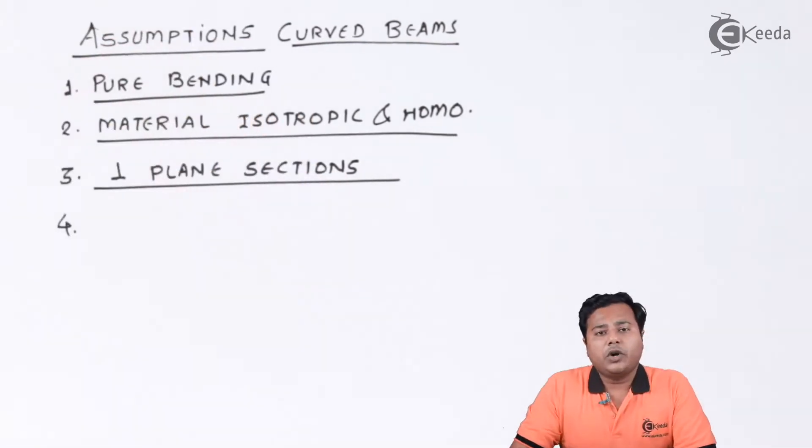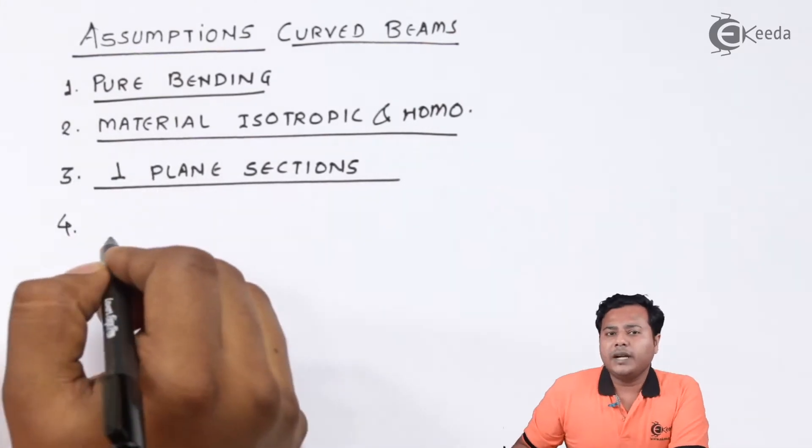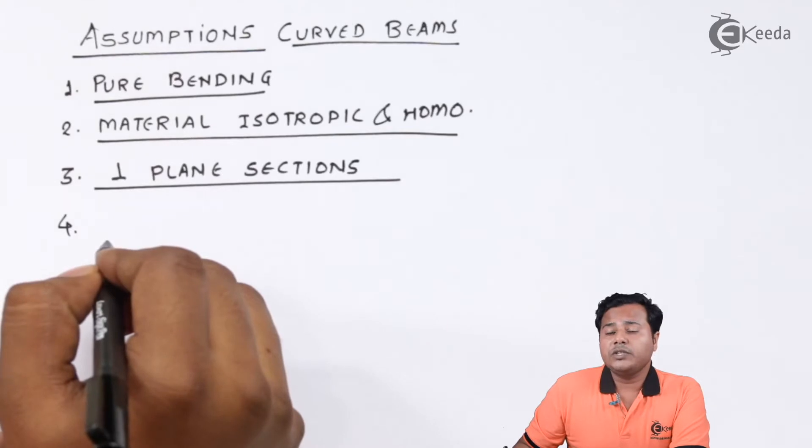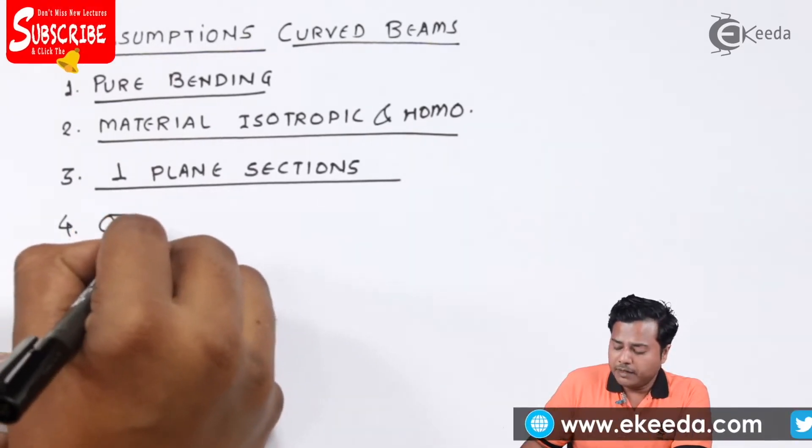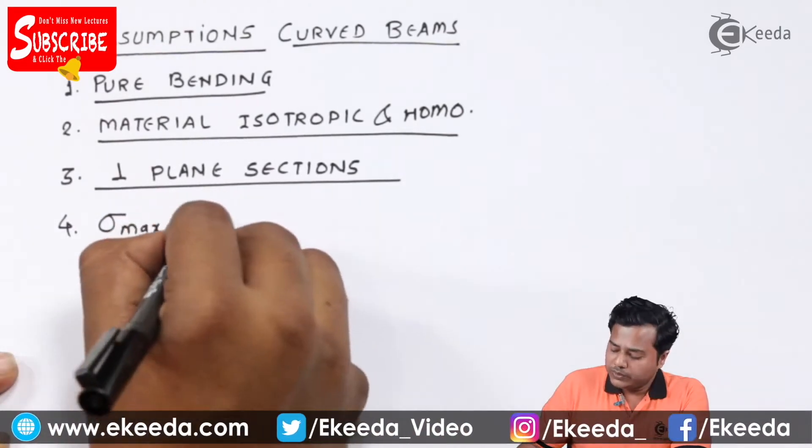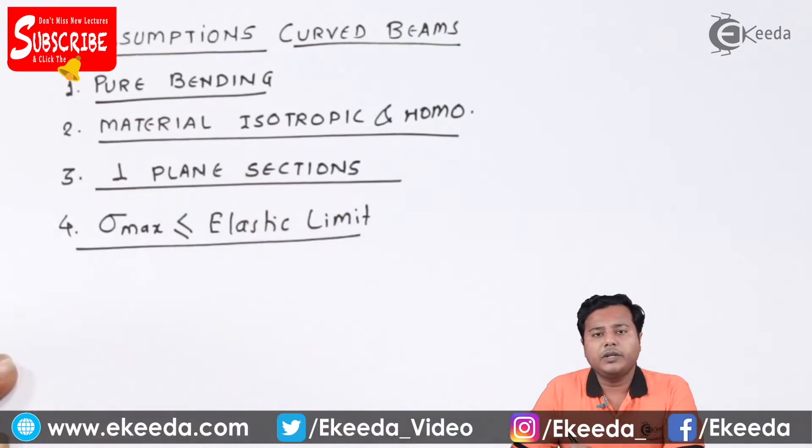The next assumption is all about stress value. It is assumed that the stress value or the maximum stress value that is inducing inside the body will not exceed the elastic limit of that particular material. As we know that when stress induced in that material exceeds its elastic value, the material switches into plastic zone. So we are not considering any plastic analysis, we are considering only elastic analysis. And that's why we'll assume that the material property or the maximum stress induced in the material will remain in the elastic limit. So I'll say sigma maximum will be smaller than or equal to elastic limit of that particular material.